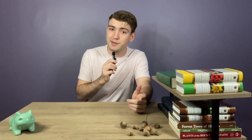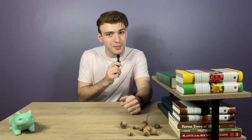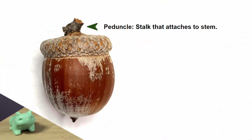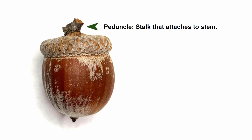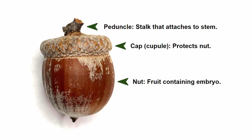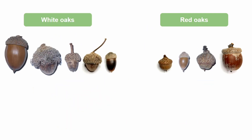So you want to learn about nuts? The anatomy of an acorn is pretty simple. At the top there is a peduncle, which is a stalk where the acorn attaches to the stem. Then there is a cupule or cap of scales — this cap is protecting the precious nut. At the very bottom of the acorn is actually what remains of the style of the female flower.